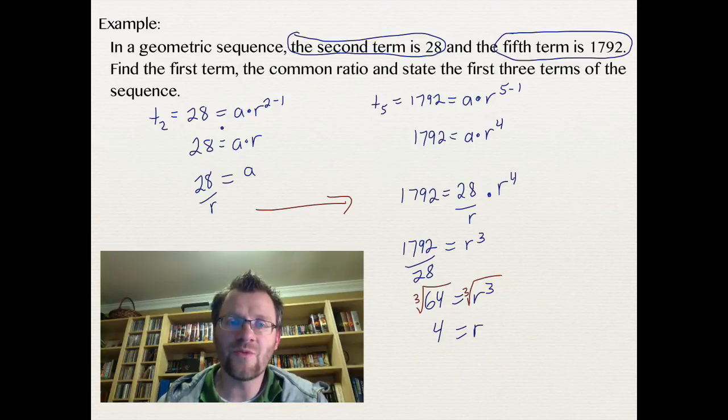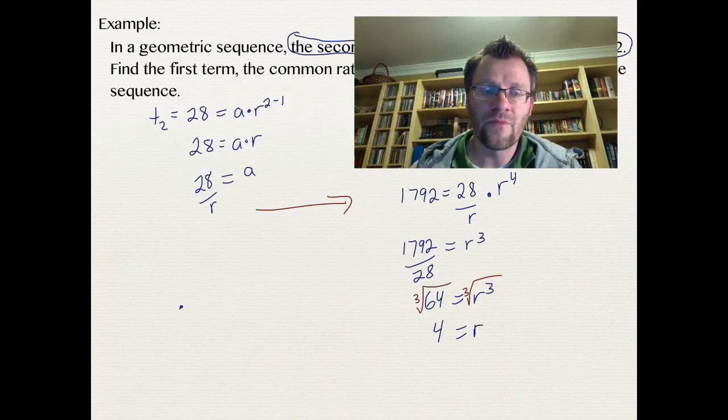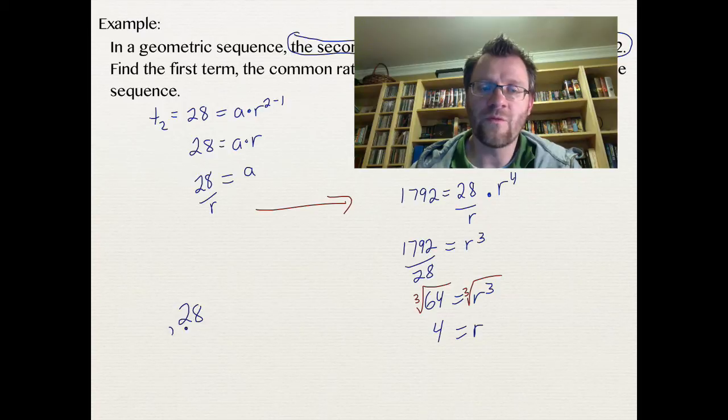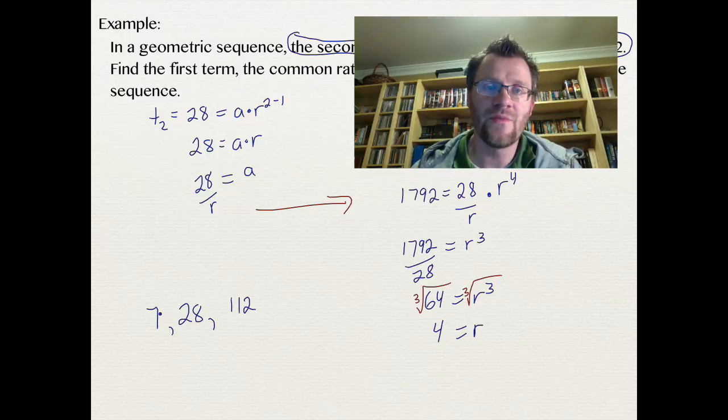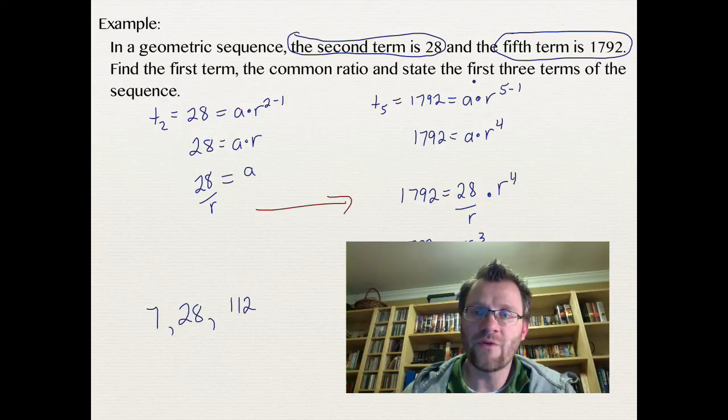So if my second term was 28, then my first term was 4 times less, so that would be like dividing it by 4, so I get a 7. And then if I take 28 and multiply it by 4, I'll get my third term, and that is 112. So there's our first term, which is 7, common ratio, which is 4, and our first three terms are 7, 28, and then 112.